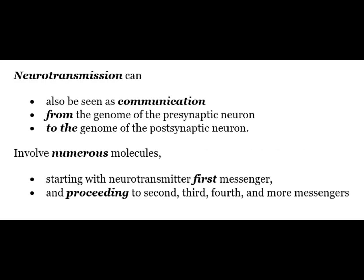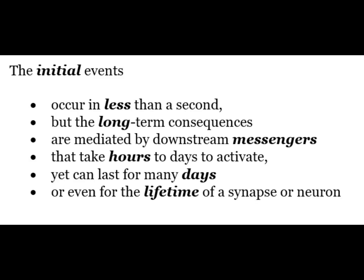Neurotransmission can also be seen as communication from the genome of the presynaptic neuron to the genome of the postsynaptic neuron, involving numerous molecules starting with the neurotransmitter first messenger and proceeding to second, third, fourth and more messengers. The initial events occur in less than a second, but the long-term consequences are mediated by downstream messengers that take hours to days to activate and can last for many days or even the lifetime of a synapse or neuron.